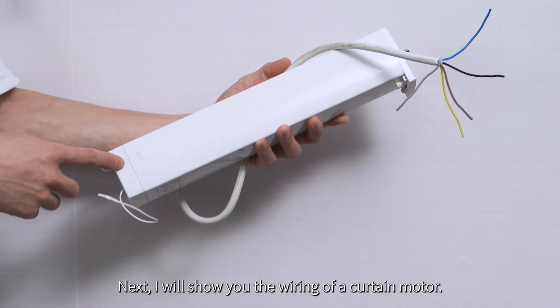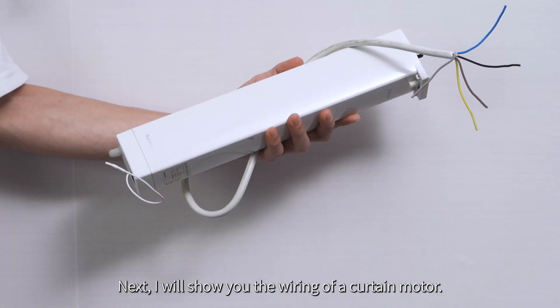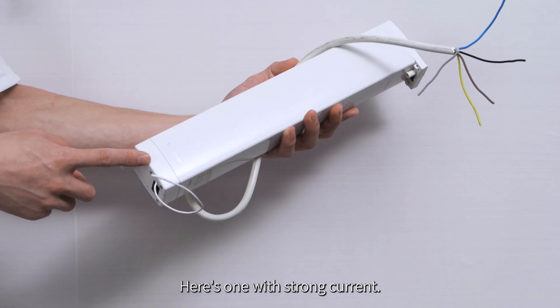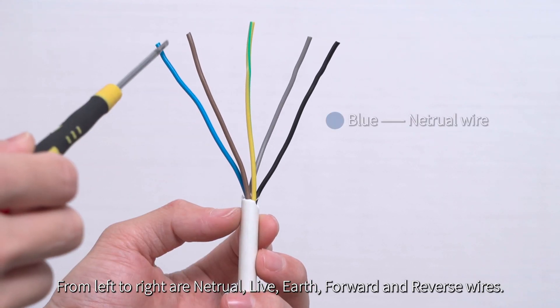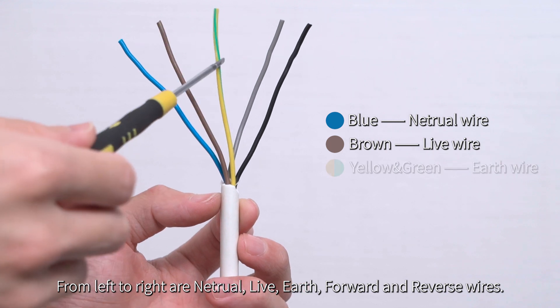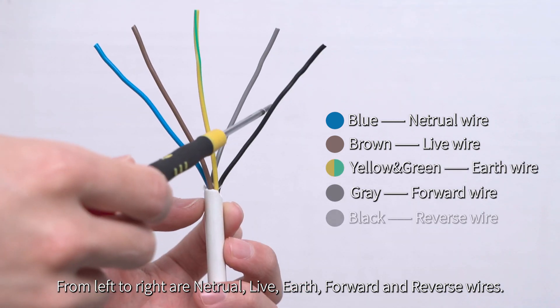Next, I will show you the wiring for a Curtain Motor. Here's one with a strong current. From left to right are neutral, live, earth, forward, and reverse wires.